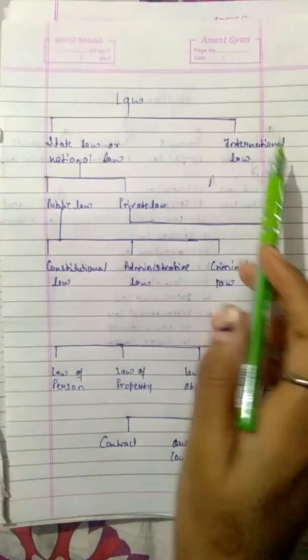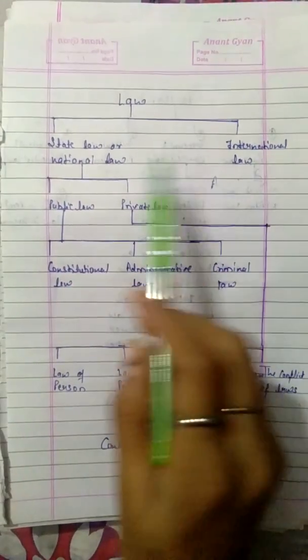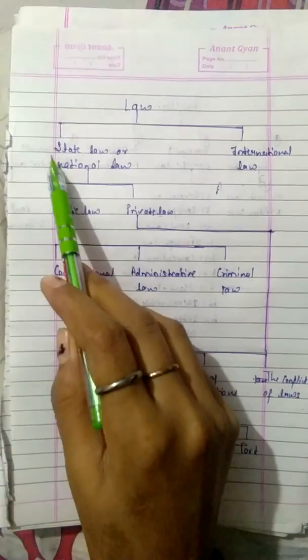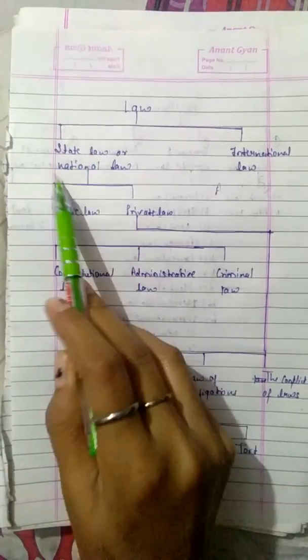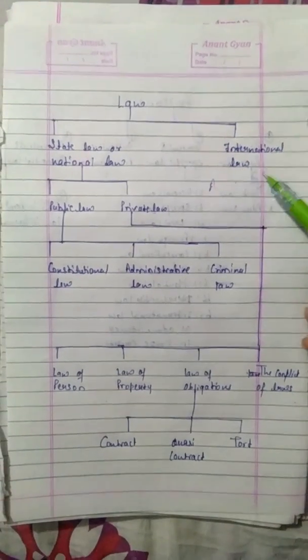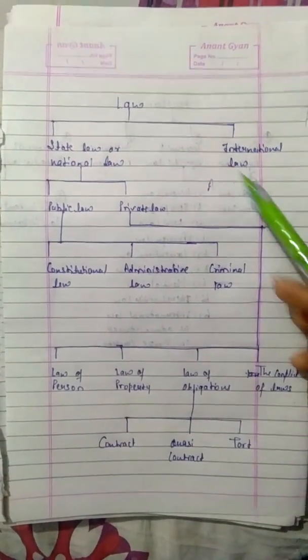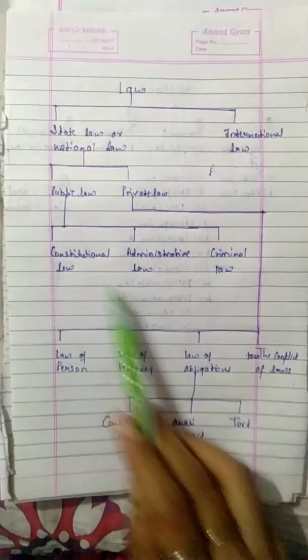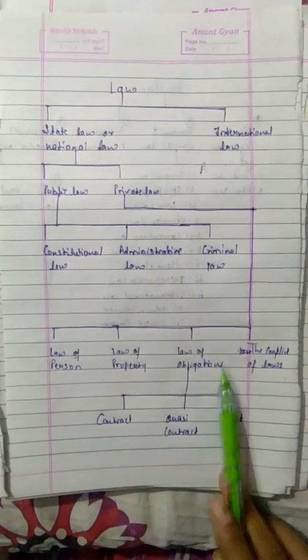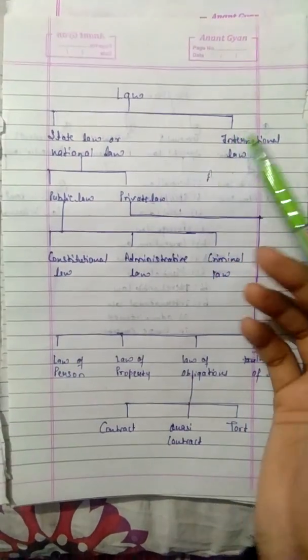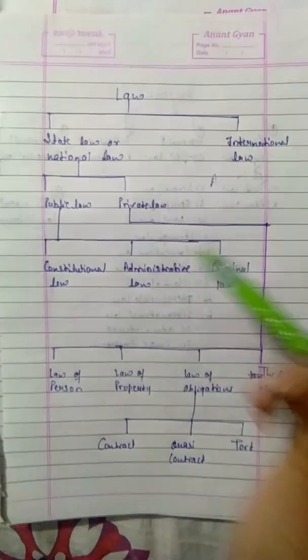We have divided the laws mainly into two parts. We have not done the jurisprudence. One is state law and national law, and the other is international laws. International laws are only available, but national laws are also available. So first we will do national law, then we will do international law.